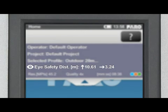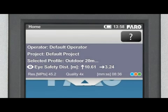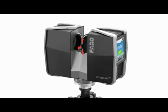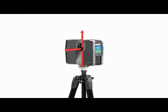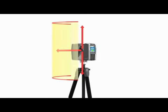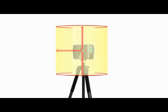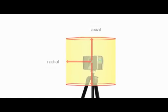The minimum distance at which you can safely stand without damaging your eyes is always indicated. We differentiate between the radial and the axial minimum eye safety distance. The hazard area around the scanner can be described as a cylinder, for which the radial minimum distance is equal to the cylinder radius, and the axial minimum distance is equal to the longitudinal axis of the cylinder starting at the mirror center.